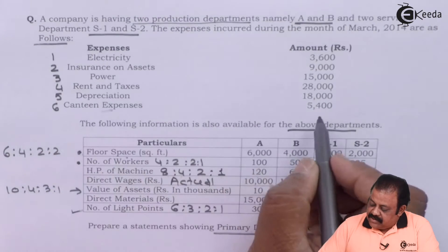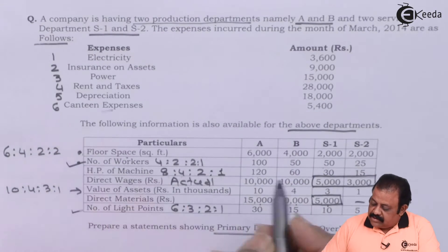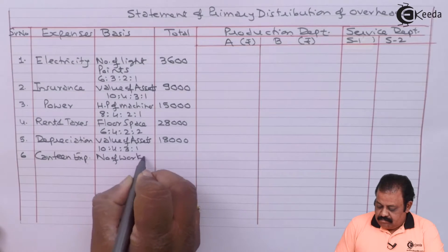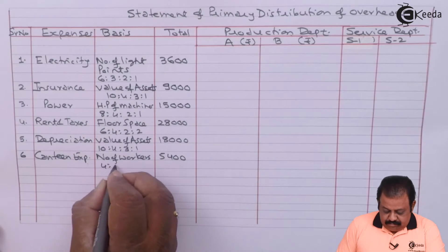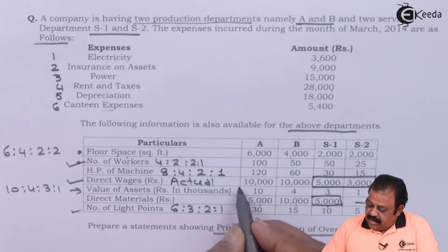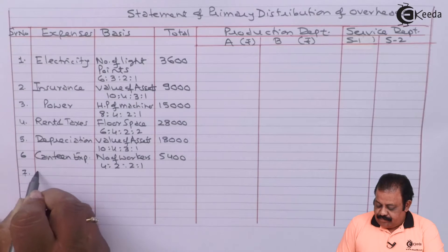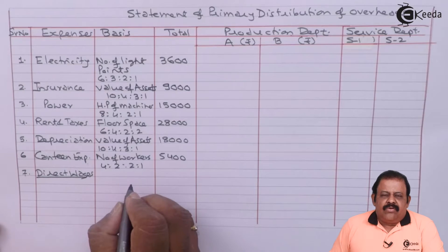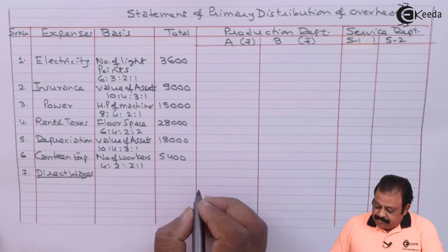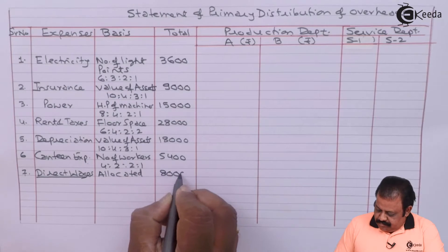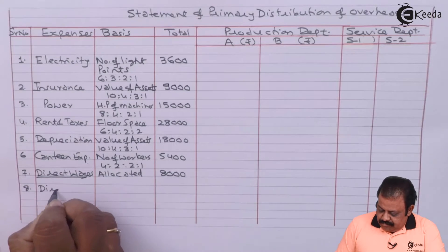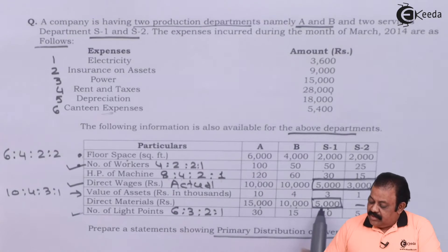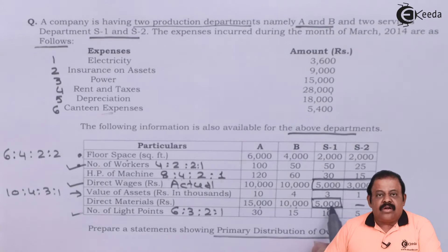Canteen expenses 5,400 — based on number of workers. Direct wages actual amounts are given and will be recorded only in the case of service departments. Direct material actual consumption is given and we are required to consider only for service departments.